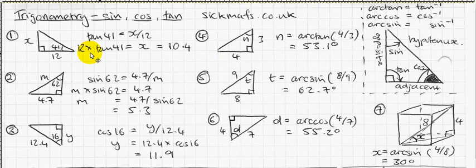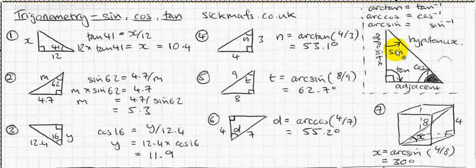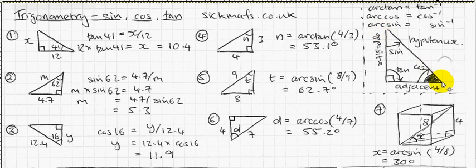First of all, every single question has an angle involved in it, either an angle you know or an angle you need to work out. So I've got an angle marked in my example triangle, and the sine button basically tells you the answer to this side divided by this side — the opposite side to the angle divided by the hypotenuse. If you don't know how these sides are labelled: this side is the opposite because it's opposite the angle; this side is the hypotenuse because the longest side in a right-angle triangle is always called the hypotenuse; and this side is called the adjacent because it's next to the angle. Adjacent means next to.